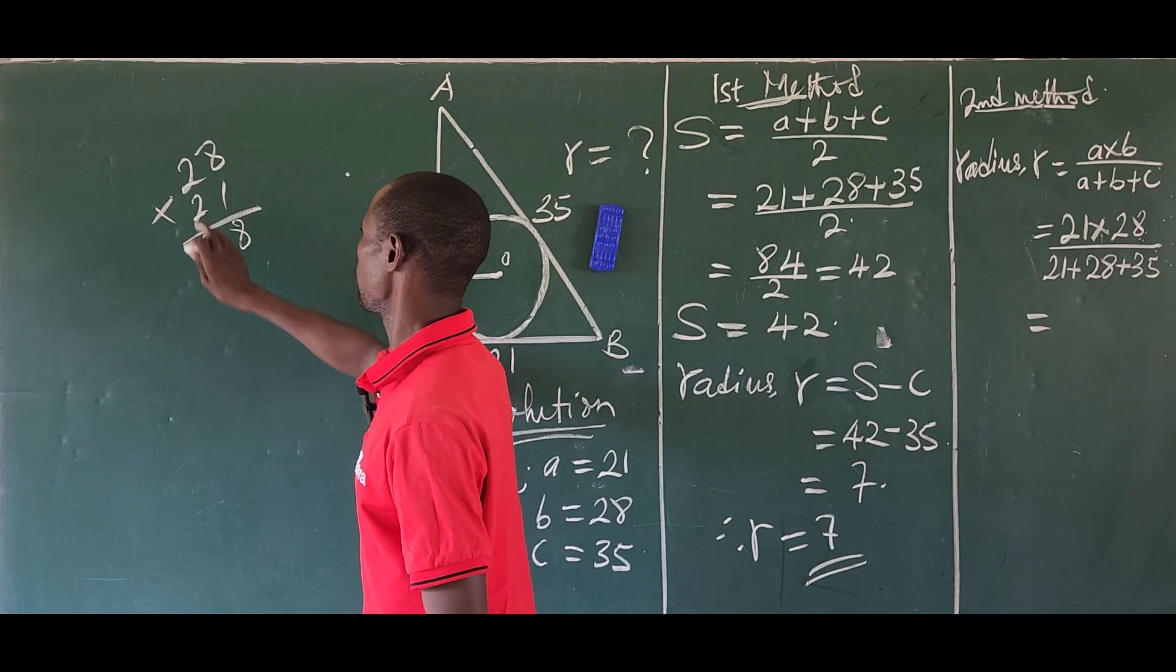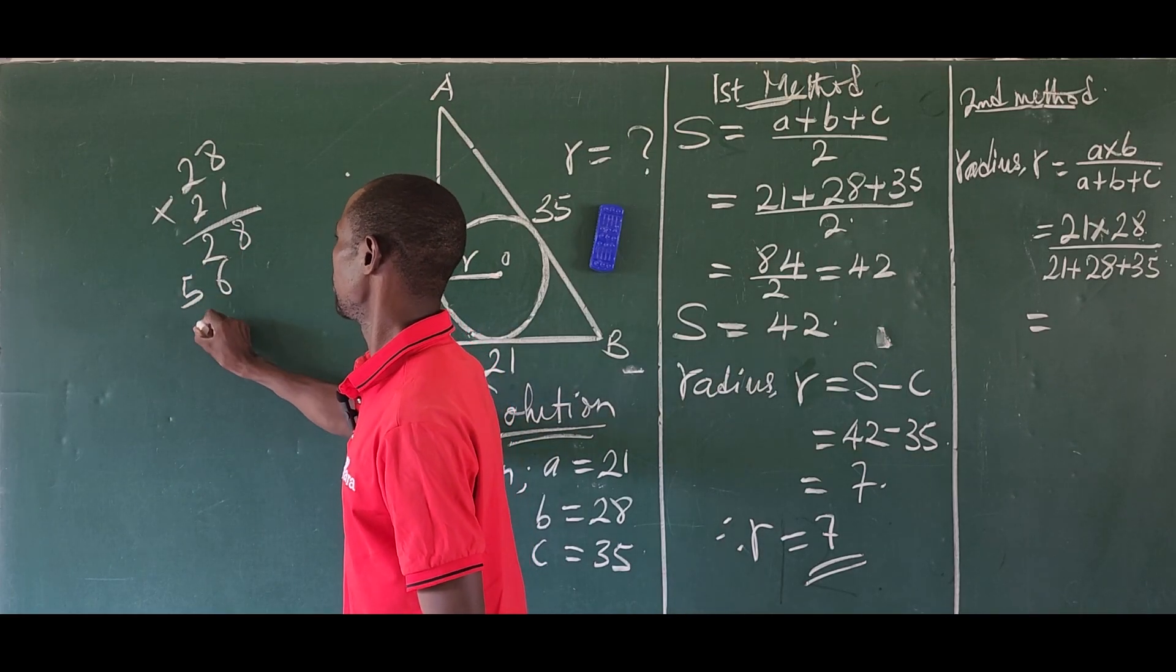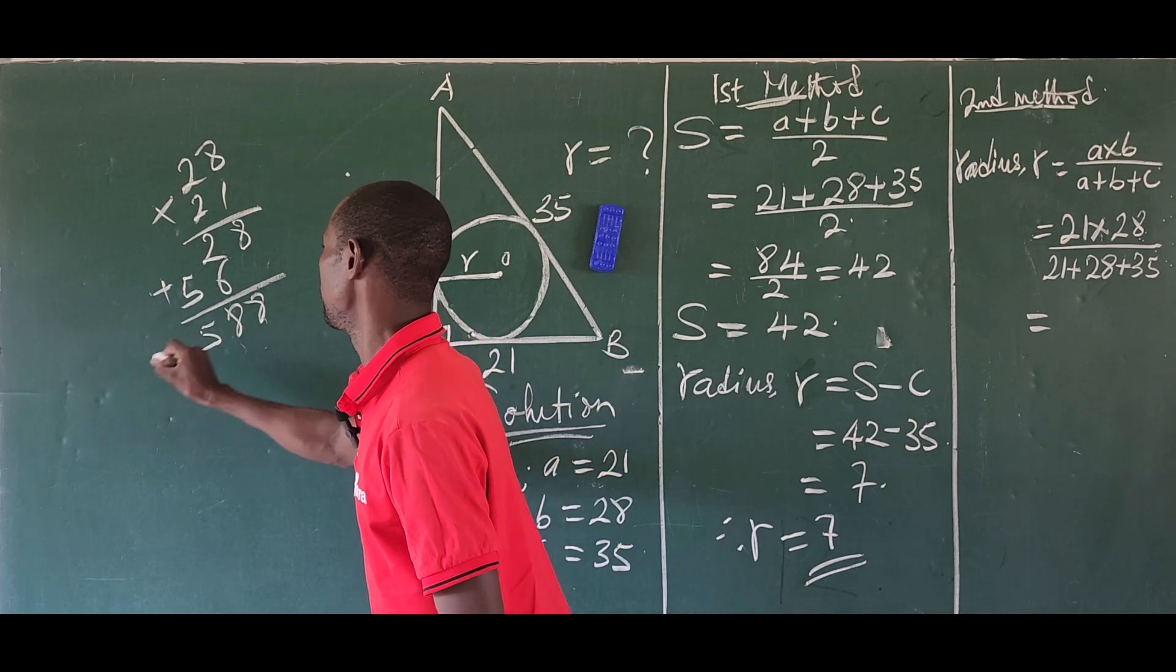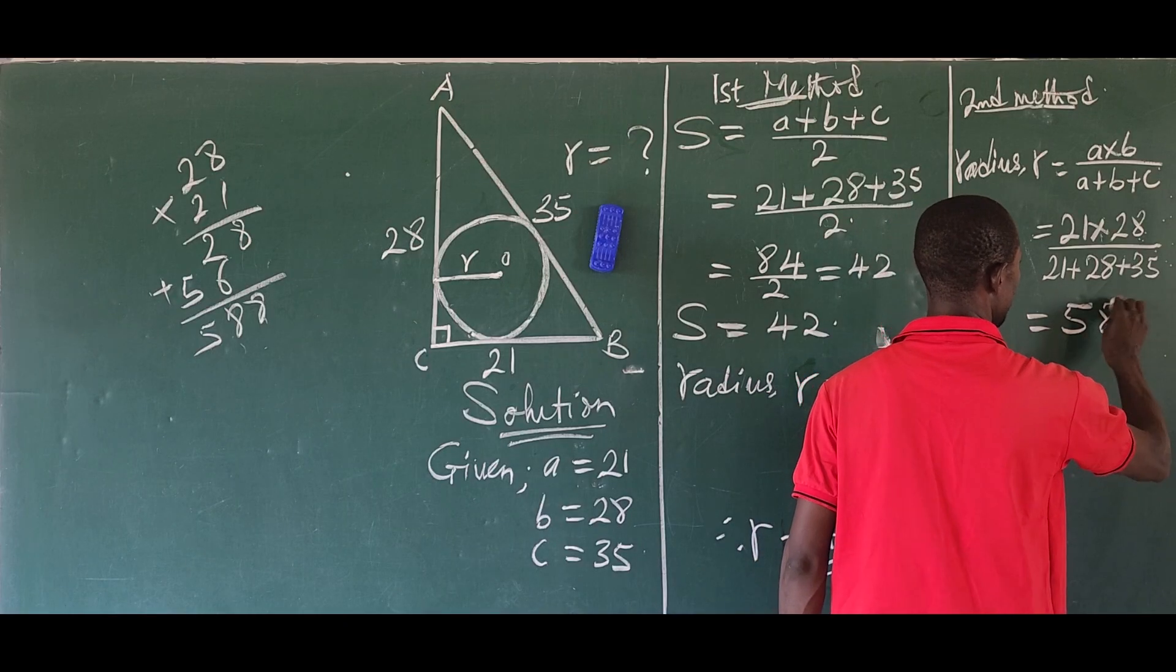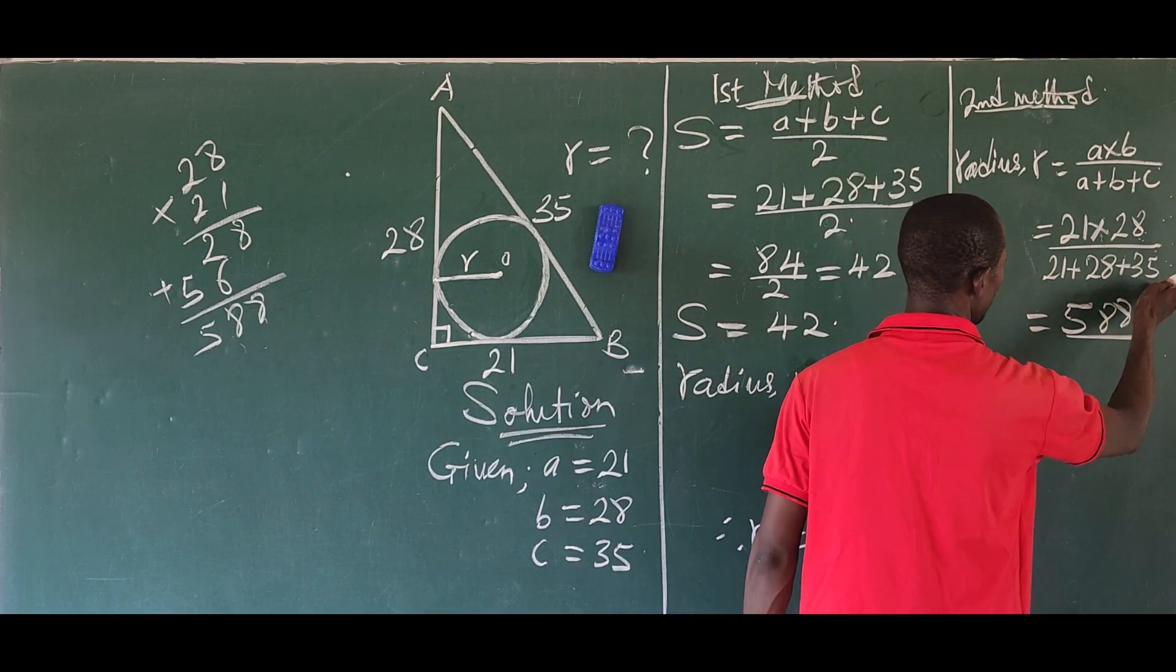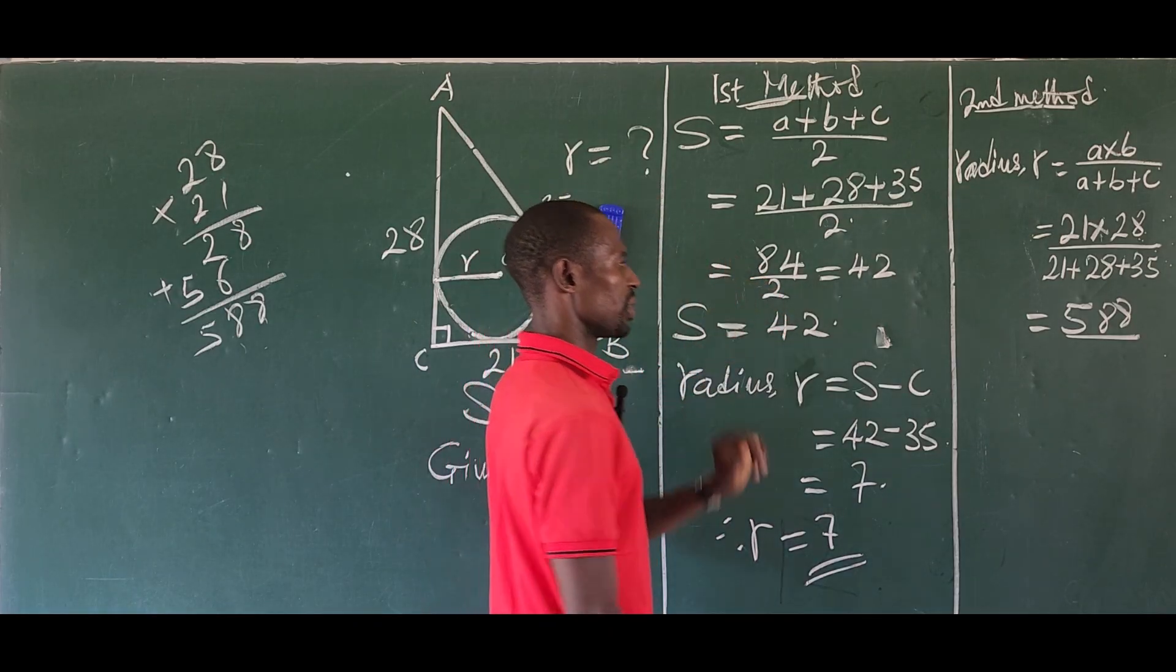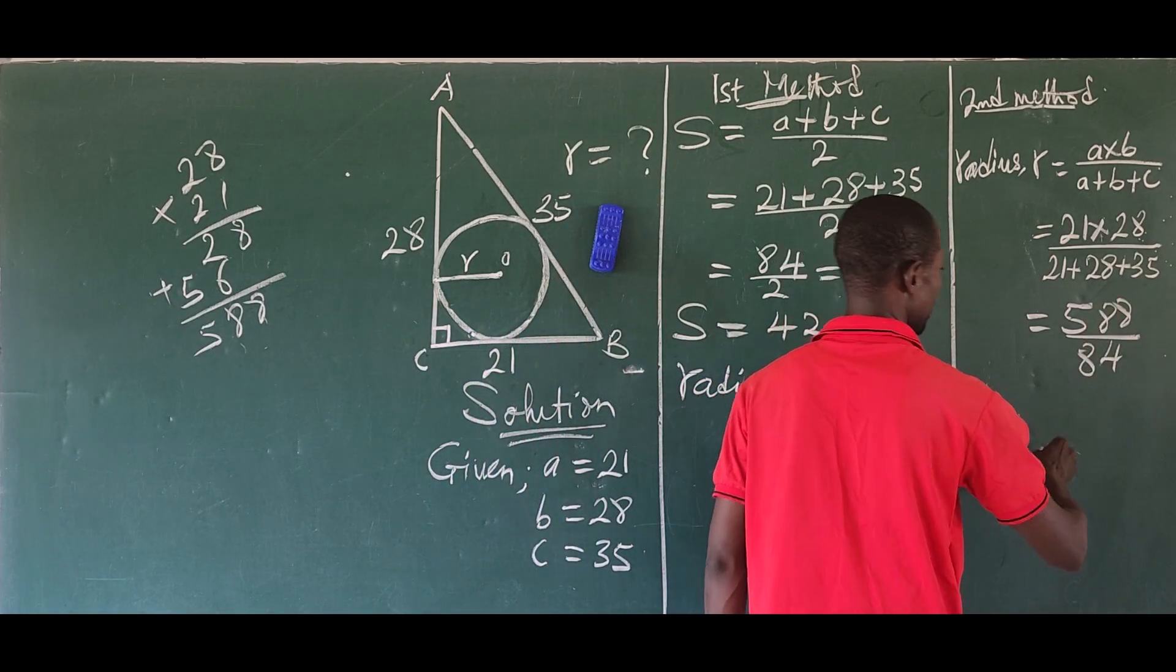1 × 8 gives us 8, 1 × 2 gives us 2. 2 × 8 gives us 16, carry 1. 2 × 2 gives us 4, plus the one we carry gives us 5. If we add up, this gives us 588. We have 588 all over 84.